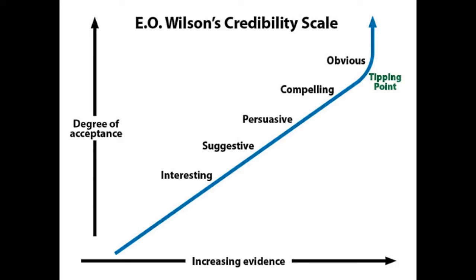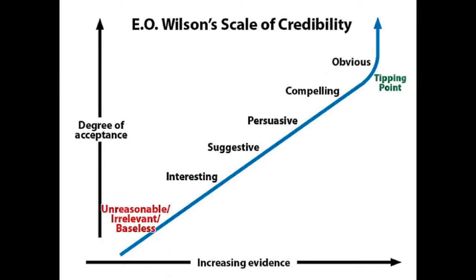But there's a problem. I don't think E.O. Wilson has had to deal with the Sasquatch as an unfolding discovery. If he had, he would realize that in this case there was a category below 'interesting' — that is, that the evidence is unreasonable, irrelevant, or baseless. And that's what seems to have happened here. When that happens, there is a blockage. The evidence is more or less banned from moving up the scale to be found interesting, suggestive, persuasive, compelling, or eventually obvious.